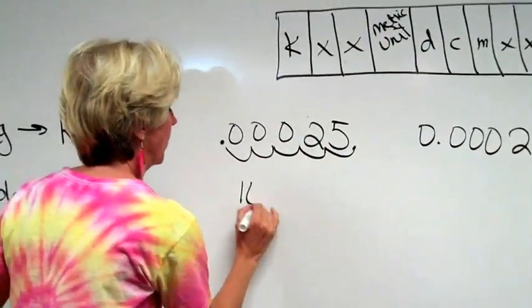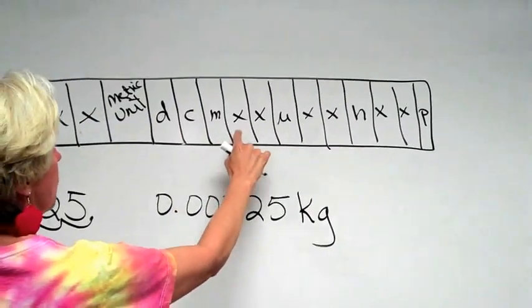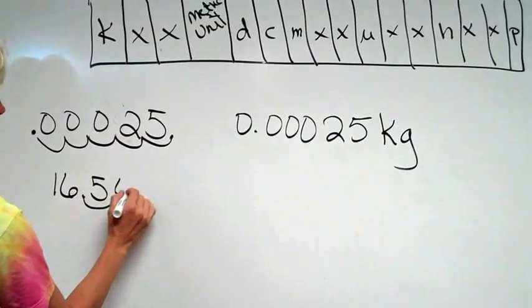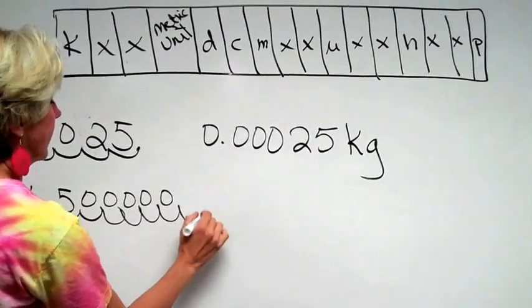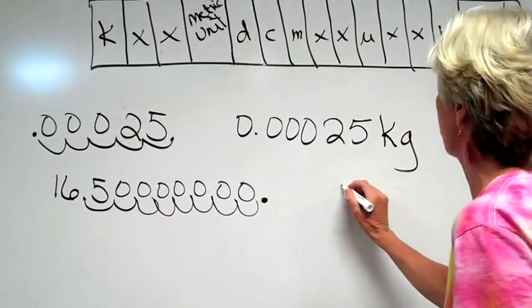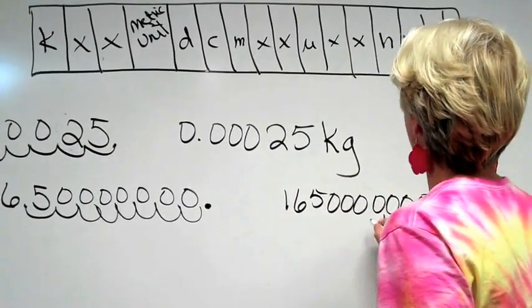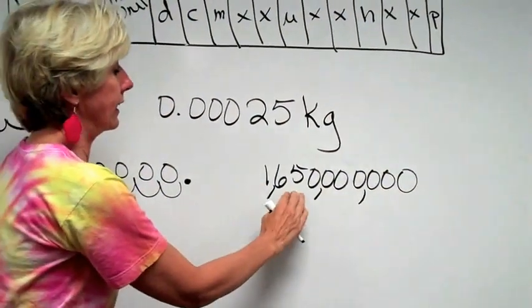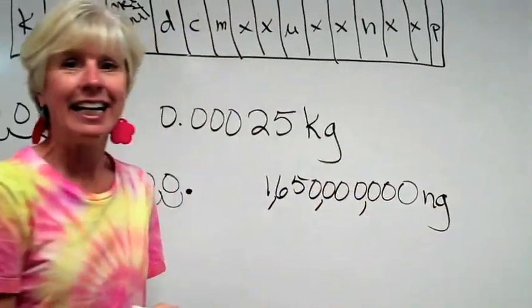So let's take 16.5 and move the decimal point again. One, two, three, four, five, six, seven, eight places to the right. One, two, three, four, five, six, seven, eight. And that's where the new decimal point is going to go. And then you're just going to write it and we've got 1,650,000,000 nanograms. It's that easy.